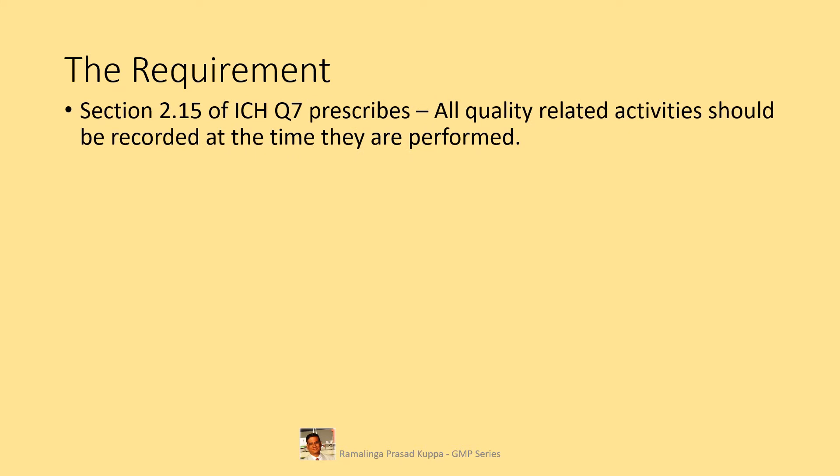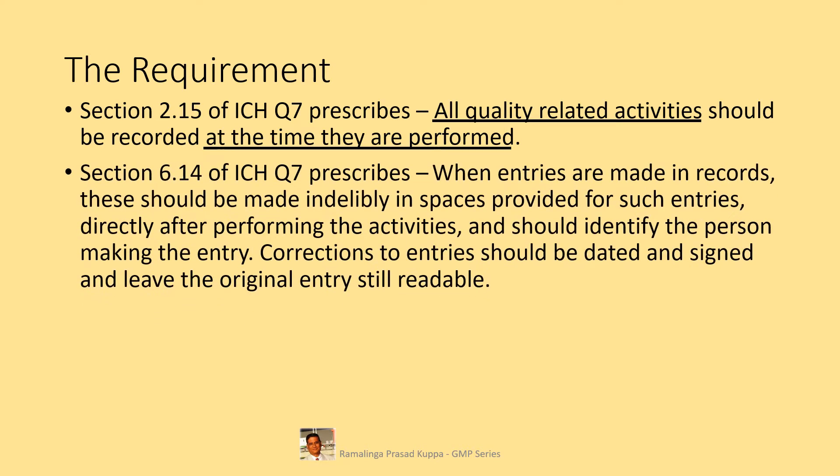Section 2.15 of ICH Q7 prescribes that all quality-related activities should be recorded at the time they are performed. Section 2.15 says that all quality-related activities should be recorded immediately after the activity. Recording of data in BPR is one of the important quality-related activities.